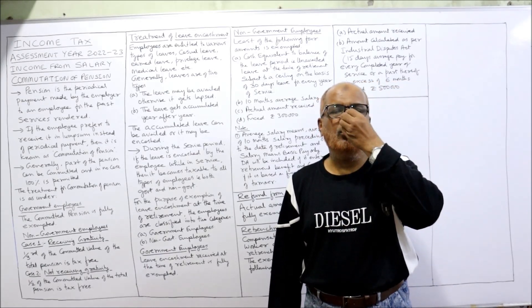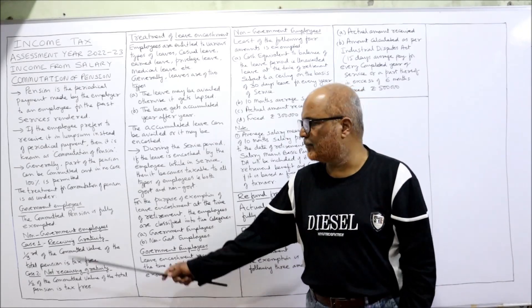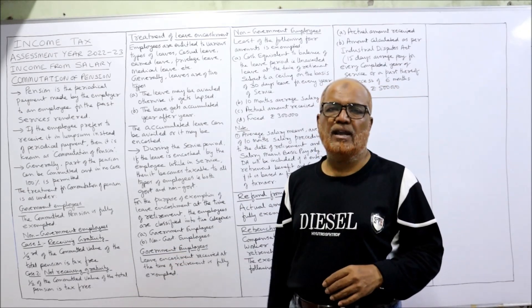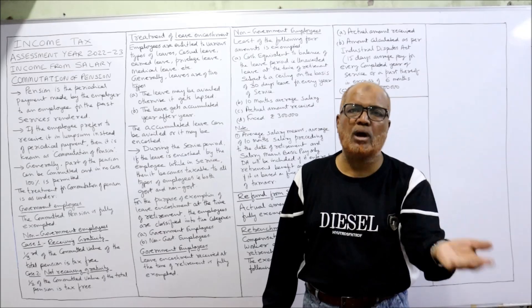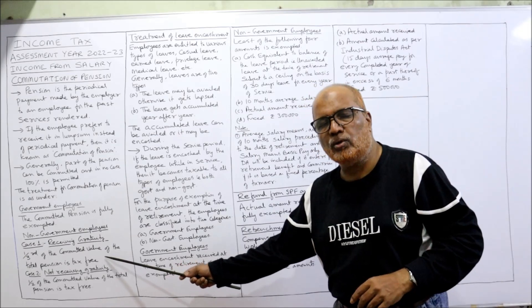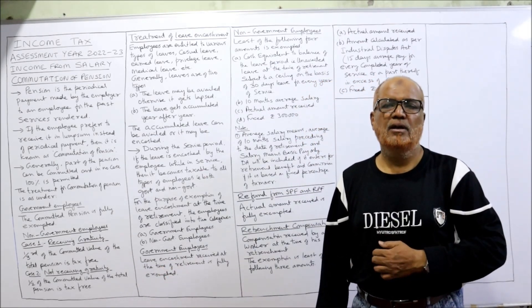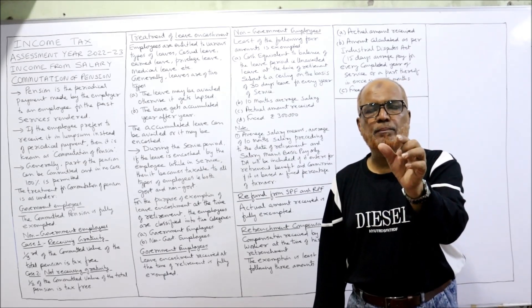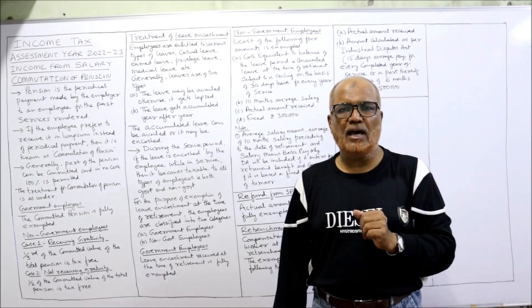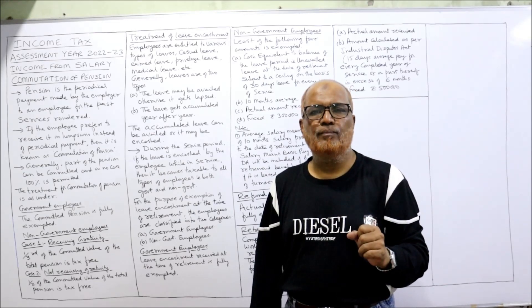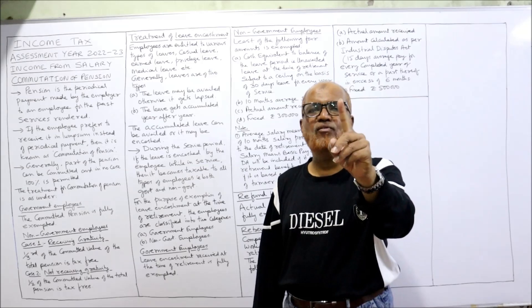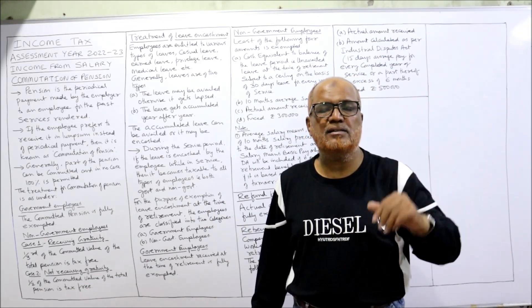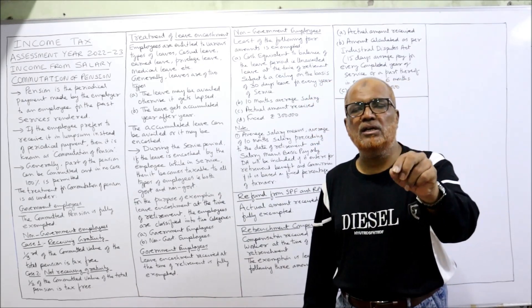For non-government employees there are two cases. Case 1: the employee is receiving both gratuity and commuted pension. In that case, one-third of the commuted value of total pension is exempted. In the working note we calculate the total commuted value of pension, and up to one-third of that is exempted. We then compare the exempted amount with the actual amount received — for example, if the exempted amount is three lakh but actual commuted pension received is four lakh, then one lakh is taxable under the subhead salary.